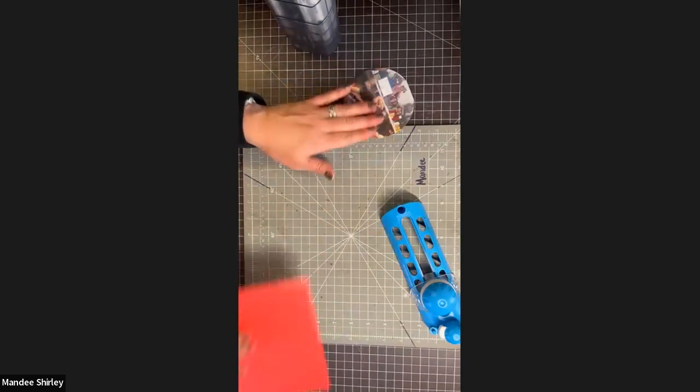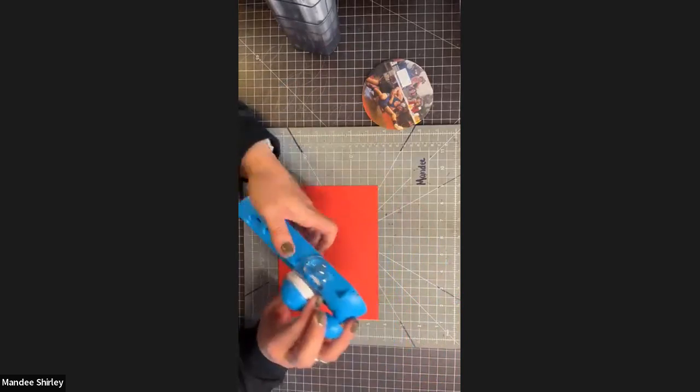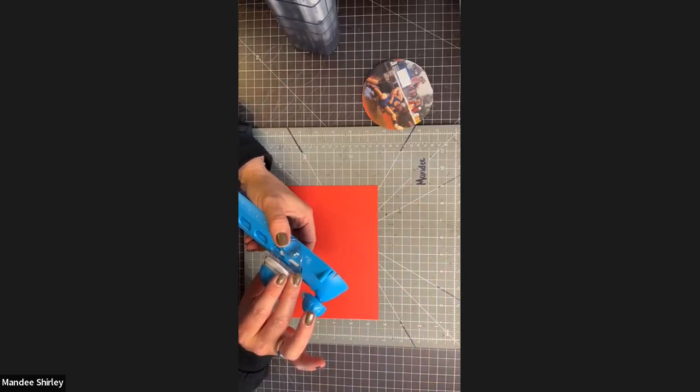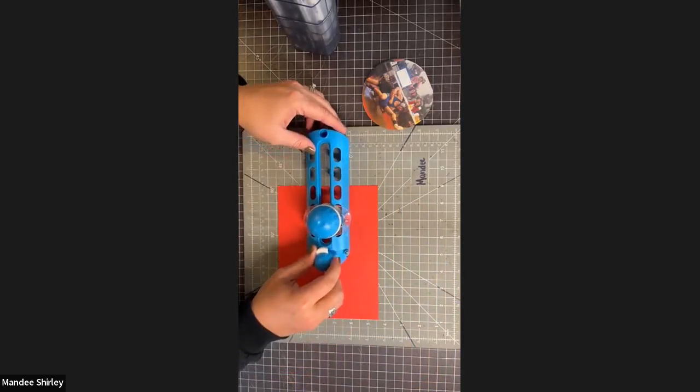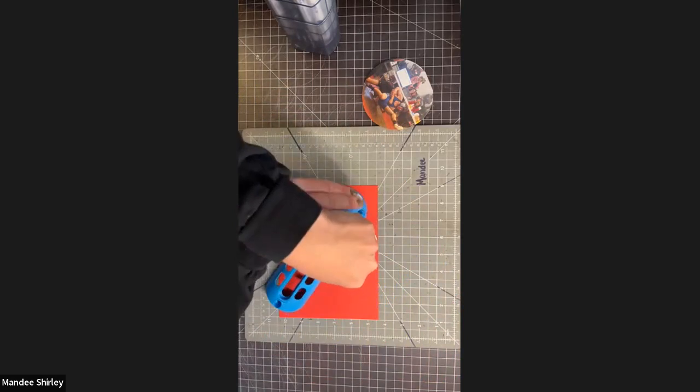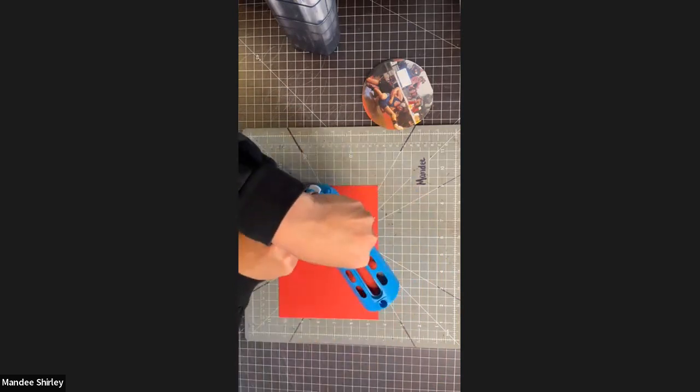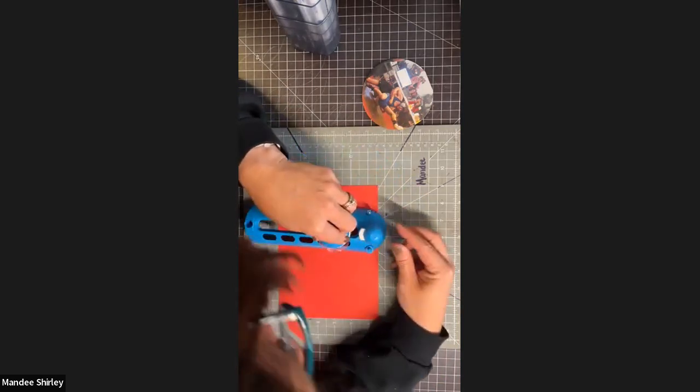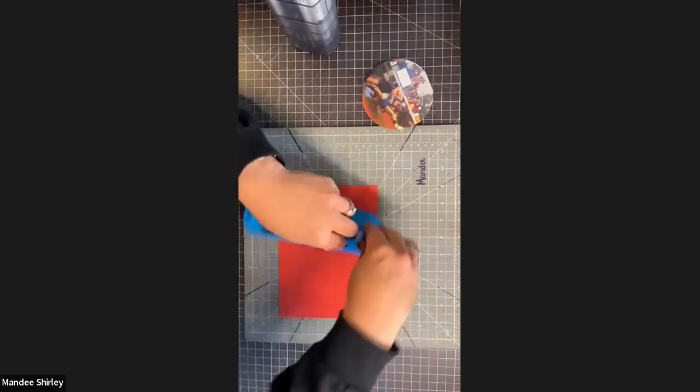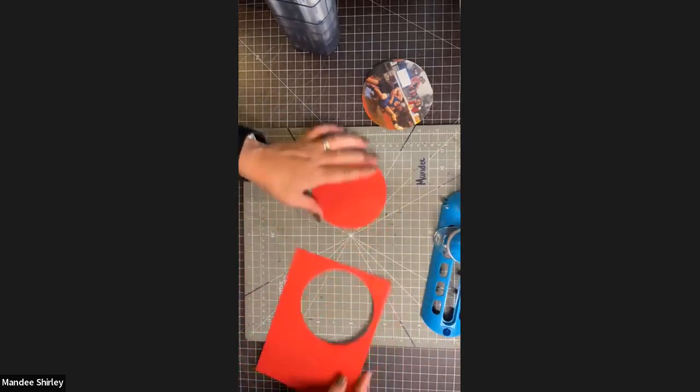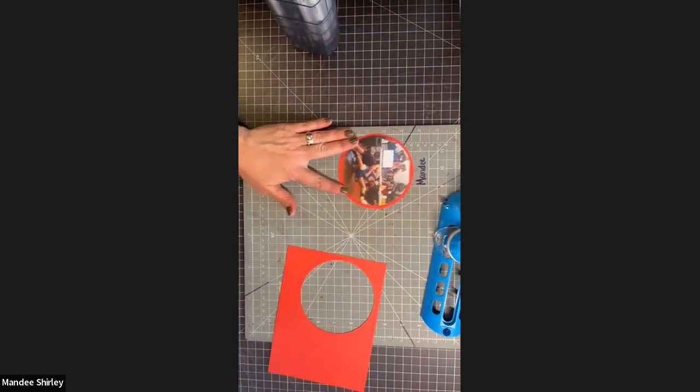Now what I want to do is make a mat for that picture. So I got some red paper. I'm going to make this just a little bigger, like two tenths. I'm going to put this in the center and you can swing this around to see where it's going to cut. If you don't want to waste paper, which I do hate doing. Squeeze the white button, spin it around, make sure it's cut. Quick and easy mat for that picture.